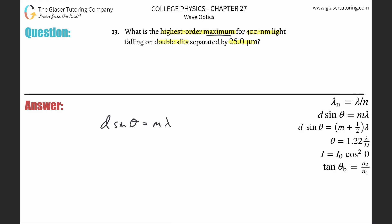The largest angle that can be obtained — what we have to do is find the highest order maximum. In other words, they're asking us to find the highest value for m. So in order to solve for m, we just divide out the wavelength.